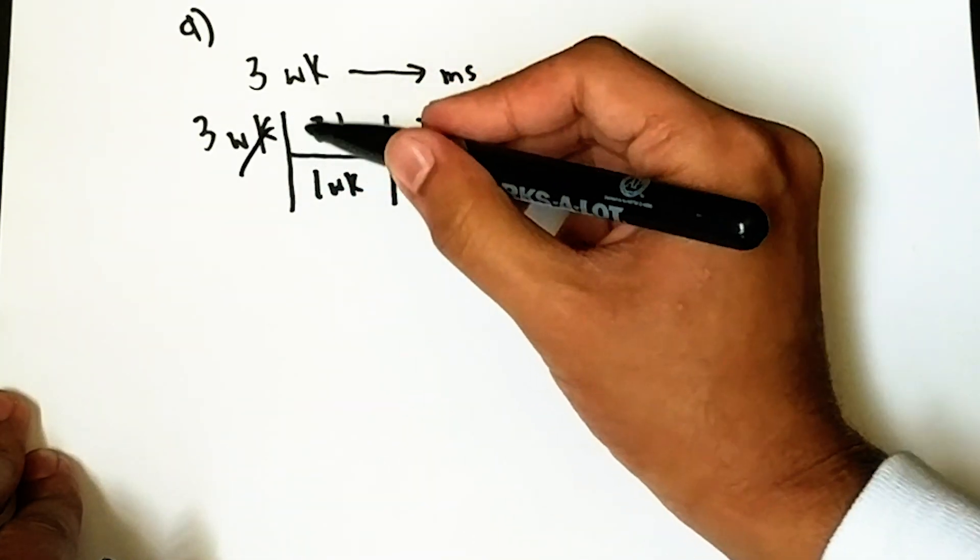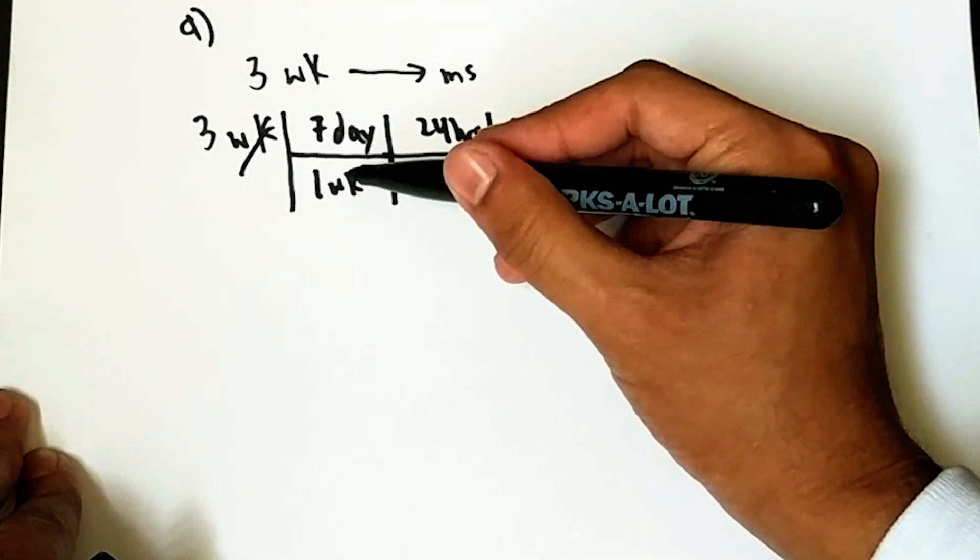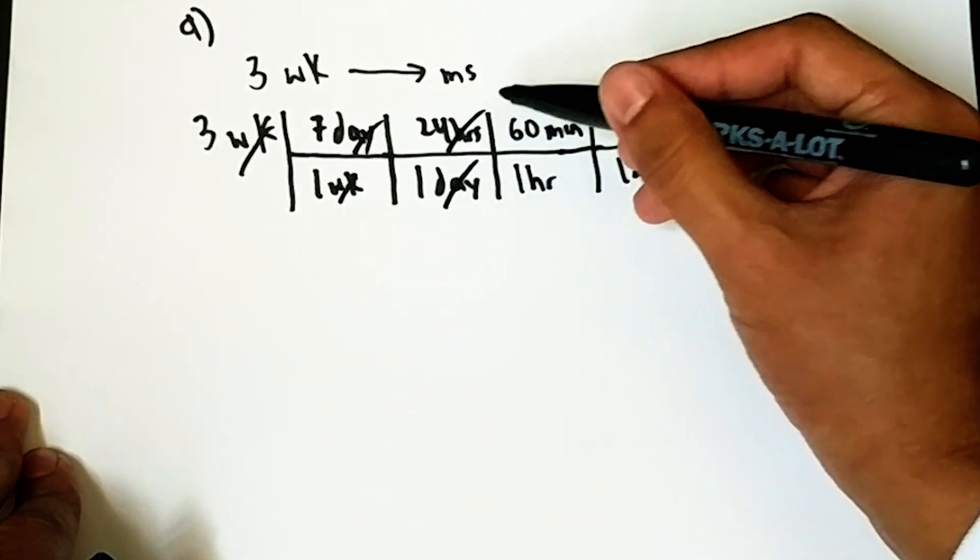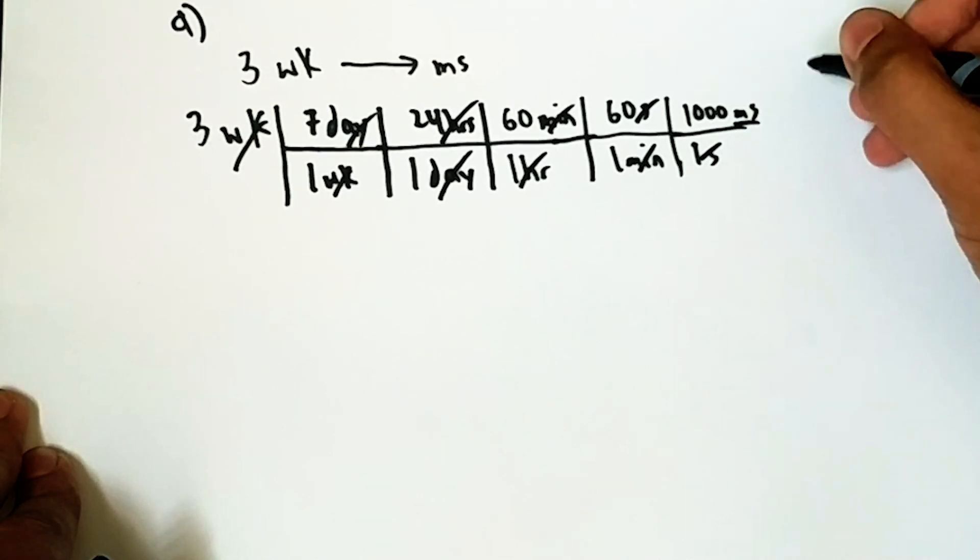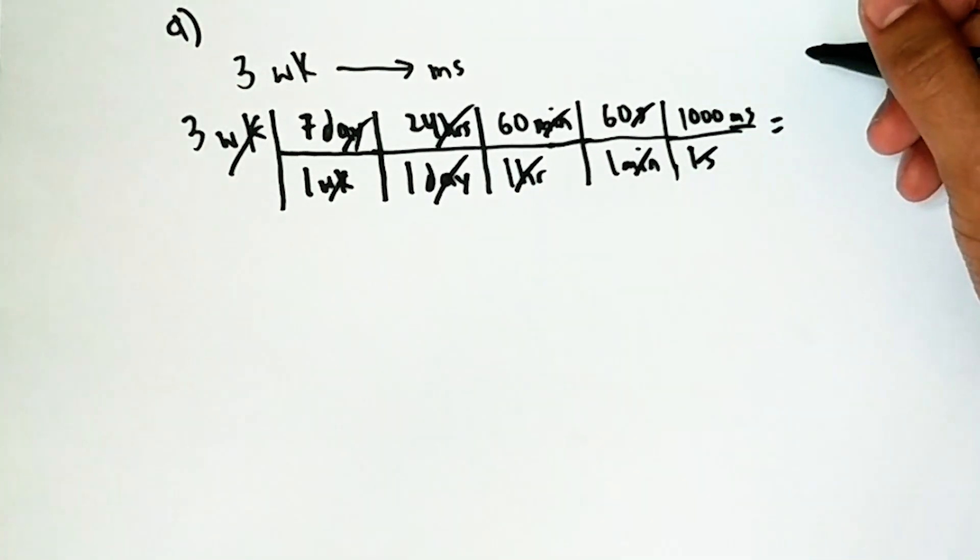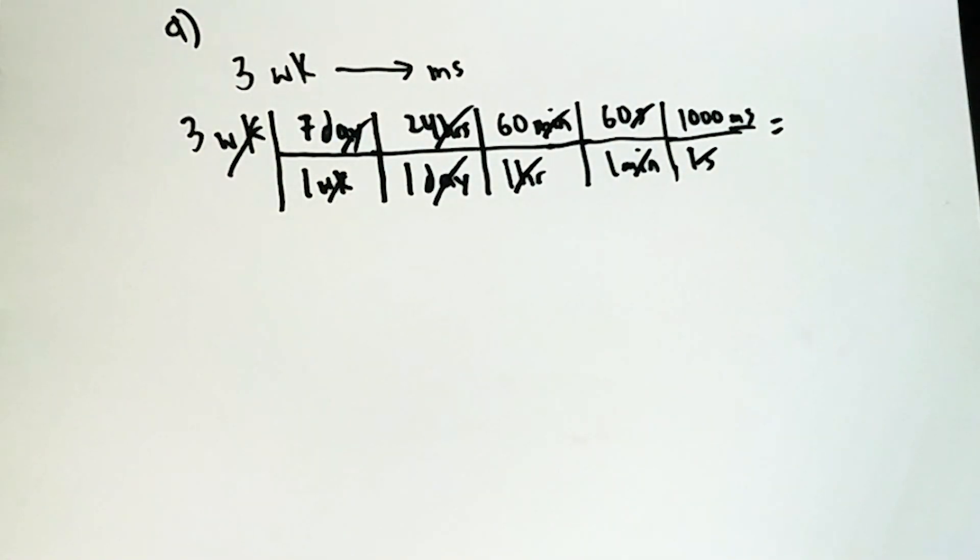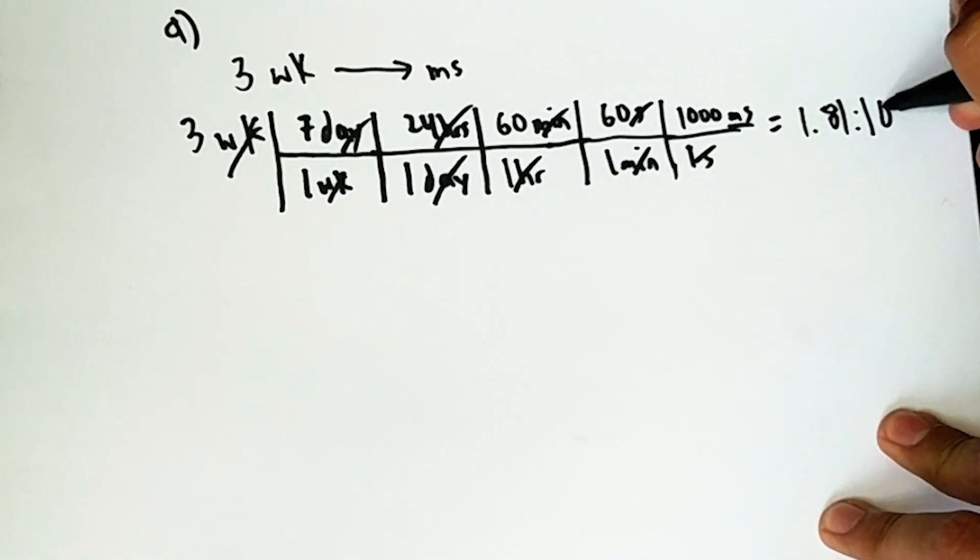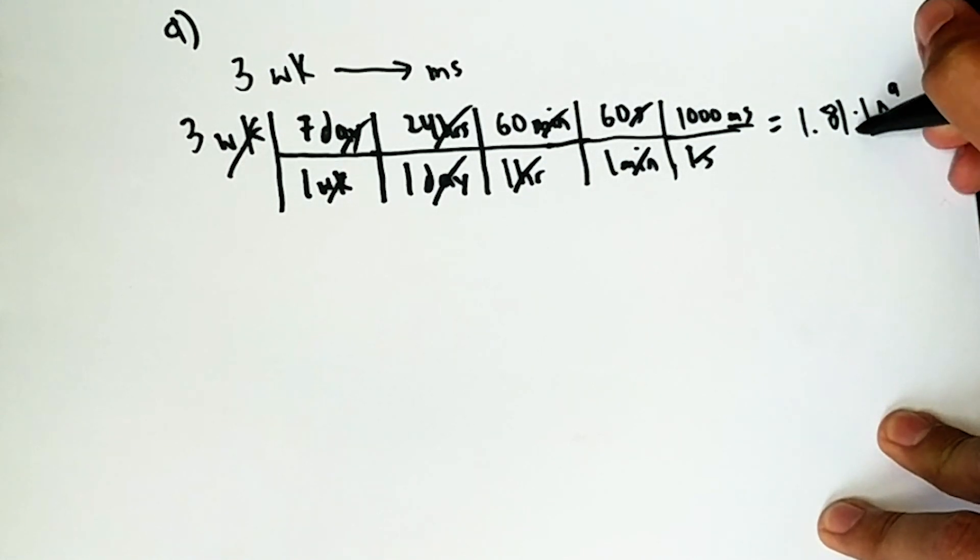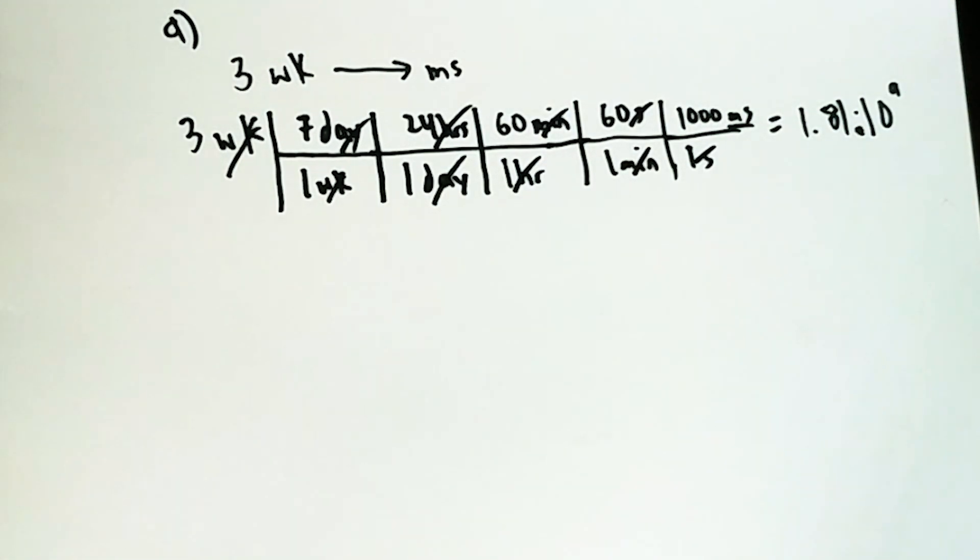So, again, if we cancel out weeks, days, hours, minutes, and seconds, we are left with an answer of, what was the answer? Very large number. It's 1.81 times 10 to the ninth. Let's not put that. Yeah, see, one of the reasons I just want to use pen and paper is because it's much faster.